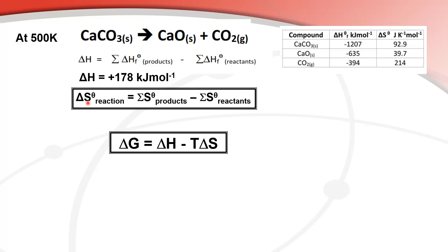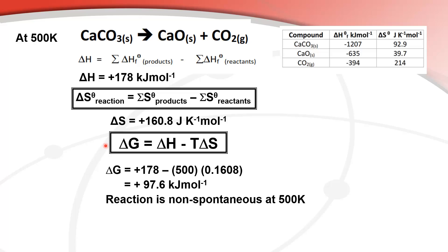Next, calculating the change in entropy using the relevant column of the data table, the change in entropy is positive 160.8 J/K·mol. One important thing to be careful of is the units: the change in enthalpy is in kilojoules per mole, while the change in entropy is in joules per Kelvin mole. So you must divide the entropy value by 1000 to convert it to kilojoules before using the equation.